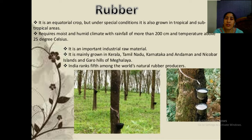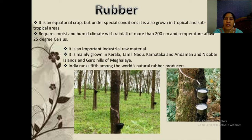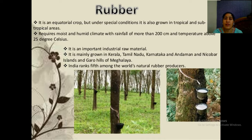Rubber requires more than 200 cm of rainfall and the temperature should be above 25 degrees Celsius. It is an important industrial raw material, and we use many products made from rubber. The major rubber-growing states in India are Kerala, Tamil Nadu, Karnataka, Andaman and Nicobar, and the Garo Hills in Meghalaya. Meghalaya has three important hill regions: Garo, Khasi, and Jaintia. India is the 5th largest producer of rubber, and Thailand is the largest producer in the world.